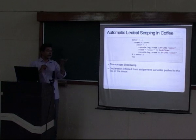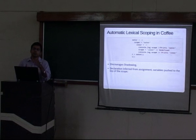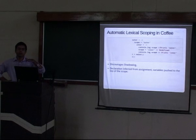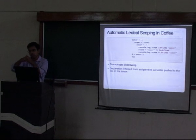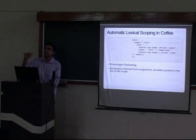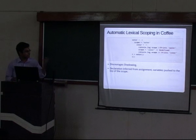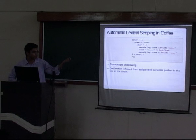JavaScript does not have block scope — unlike C, it has function scope. If you declare or assign a variable at the end of a function, that variable is actually available at the top of the function. The best practice to avoid confusion is to declare variables at the top of the function, which is exactly what CoffeeScript does when it compiles your code.